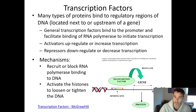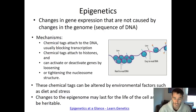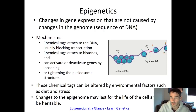Essentially, transcription factors can act as an on-off switch for a gene. That's the first mechanism. The second one is epigenetics — changes in gene expression that are not caused by changes to the genome or to the DNA sequence. Instead of using transcription factor proteins, epigenetics uses chemical tags.